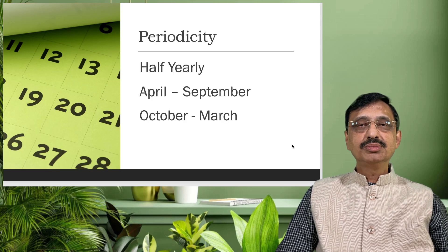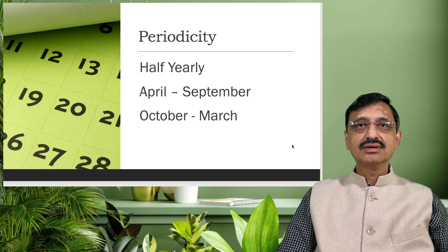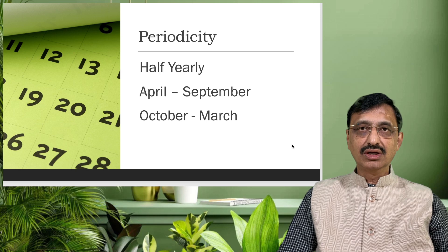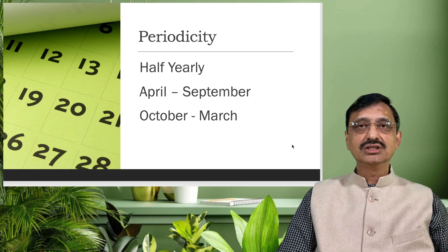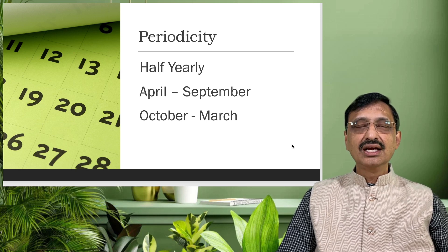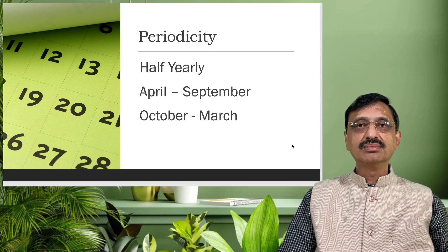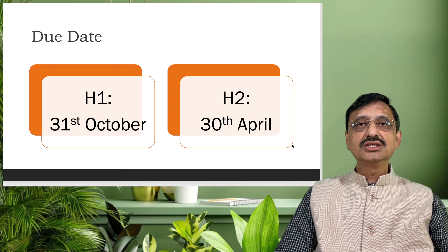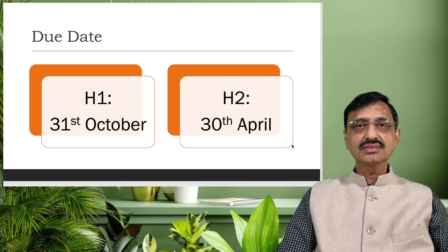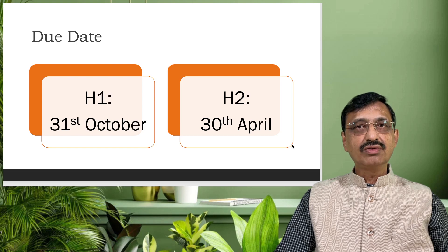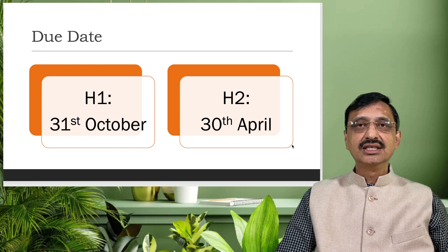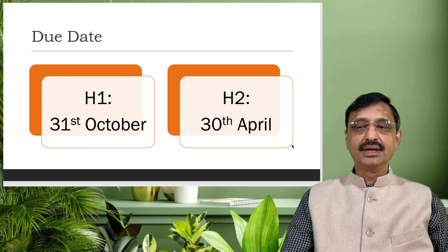The form is to be filed on a half-yearly basis. The first period is from April to September, and the second period is from October to March. The due date for the first half-yearly return is 31st of October, and for the second half-yearly return the due date is 30th of April.